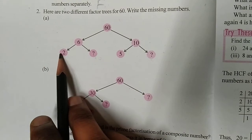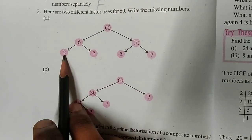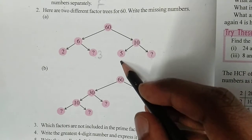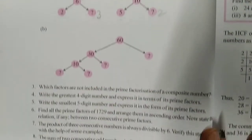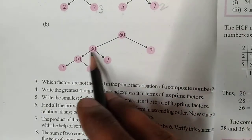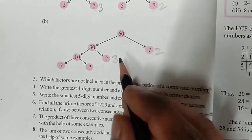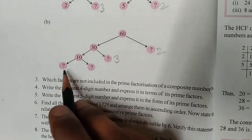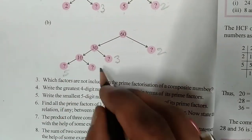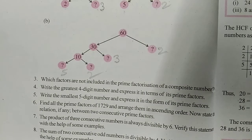What you need to do is: how many times does 2 go into 6? — 2 × 3 = 6, so write 3 there. How many times does 5 go into 10? — 5 × 2 = 10, so write 2 there. For the second factor tree of 60: 30 × 2 = 60, so write 2 there. 10 × 3 = 30, so write 3 there. And 5 × 2 = 10, so write 5 and 2. This is the complete factor tree method for 60.